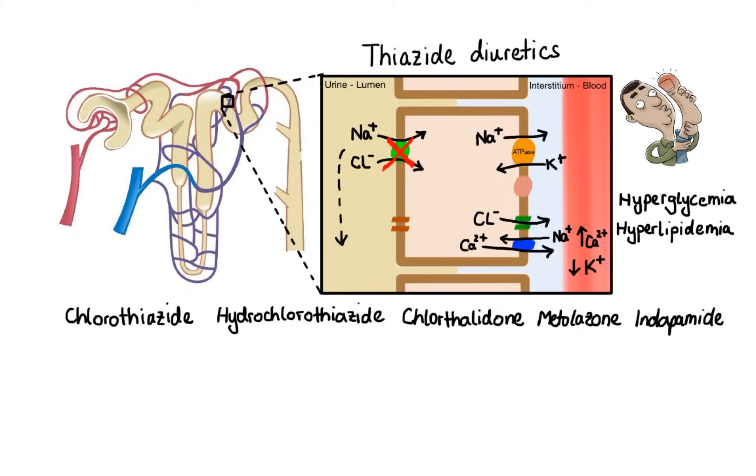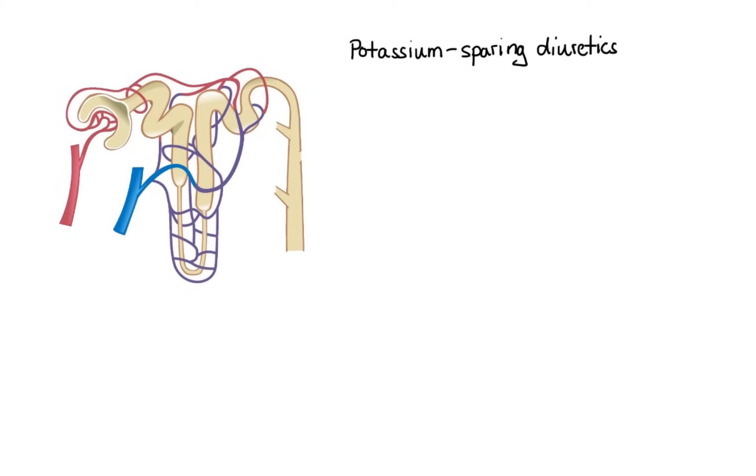Now let's move on to potassium sparing diuretics. Potassium sparing diuretics work primarily in the collecting tubule, where they inhibit sodium reabsorption and potassium excretion. Although these potassium sparing agents are relatively weak diuretics, they are often used in combination with diuretics from the other classes in order to enhance their effects.